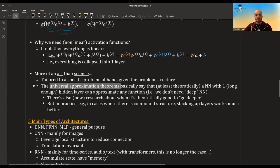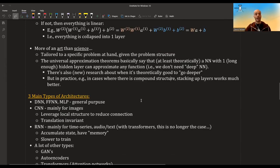There are what are called universal approximation theorems that basically say that even a neural network with one long enough hidden layer can approximate any function. So you don't really need to have more than one layer. There's new research being conducted when it's theoretically good to go deeper under which conditions. But in practice, for example, in cases where there is this compound structure that you want to uncover, stacking up layers and doing what is called deep neural networks seems to work better.